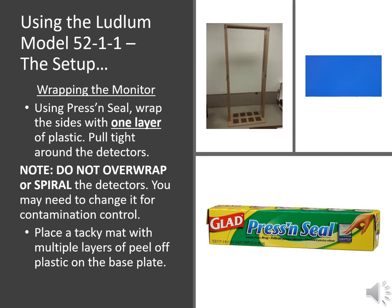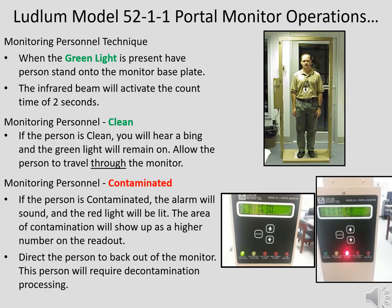Use press-and-seal cling wrap or other plastic wrap to cover the detector areas of the monitor. Run the plastic from the top of the detectors toward the pedestal and wrap it around the backside of the leg sections; when covering the pedestal, ensure it is easily removed if needed. You can use plastic, monitoring sticky pads, butcher paper, or equivalent. Portal monitors are used as a go/no-go process: if the evacuee does not alarm the monitor, the person steps through to the clean side. If the evacuee alarms the monitor, the person steps back out and is directed to further monitoring and decontamination.